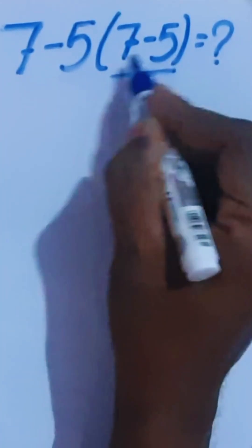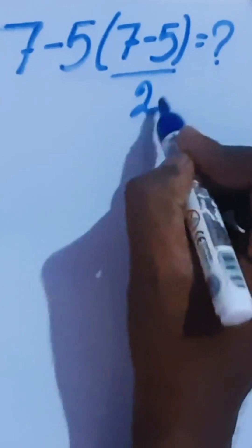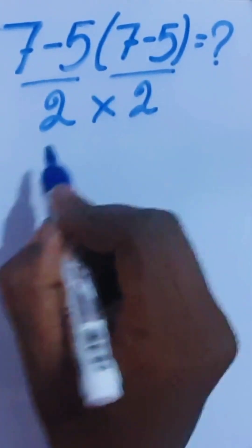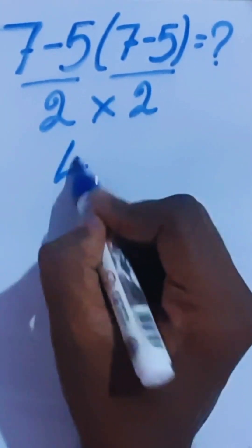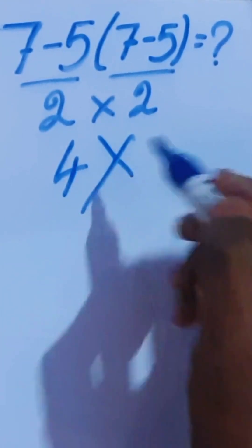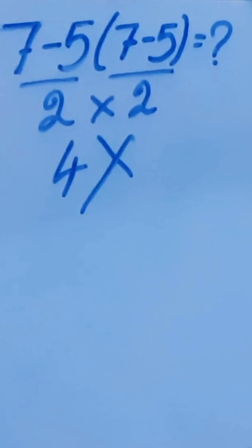Hi guys, here 7 minus 5 is 2, then 7 minus 5 is 2 times this 2, so this answer is 4. This is absolutely wrong. As per the order of operations, this answer is wrong. Now we are going to introduce that rule.